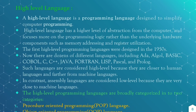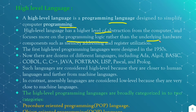Next is the high level language. This is a programming language designed to simplify computer programming. And it has a high level of abstraction from the computer and focuses more on the programming logic rather than the hardware components such as memory registers, memory addressing, or register utilization. The first high level programming languages were designed in the 1950s.